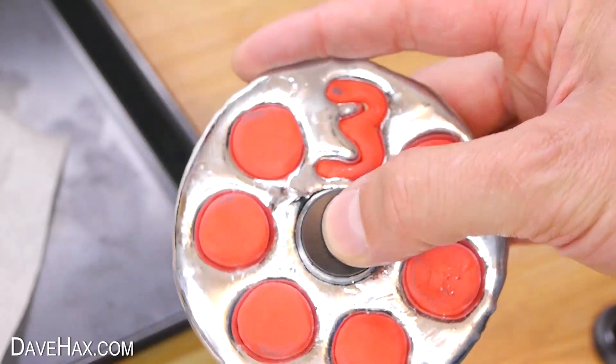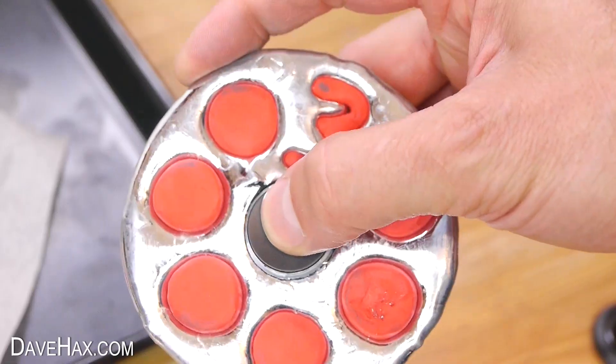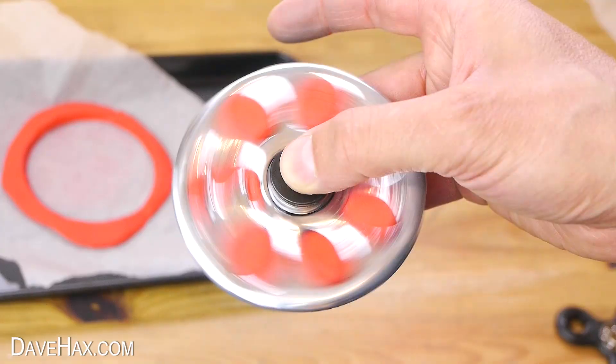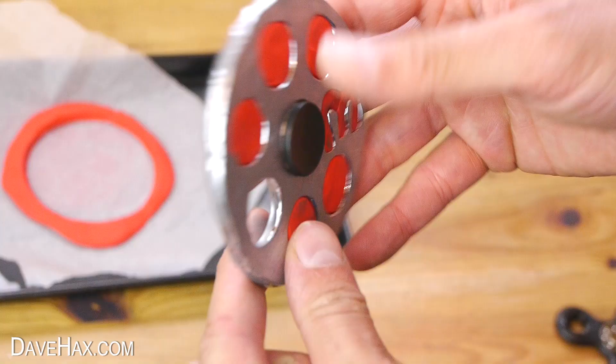You can of course keep the plasticine in the fidget spinner if you like, or remove them all so it's all just gallium.